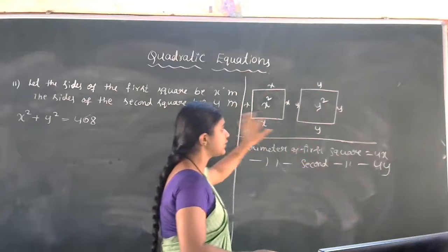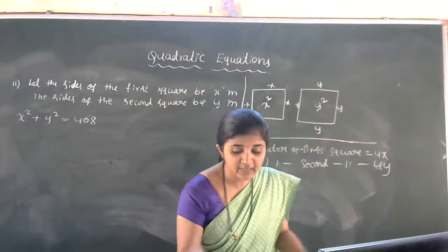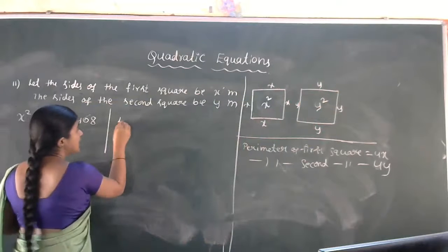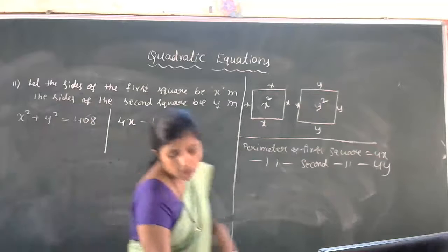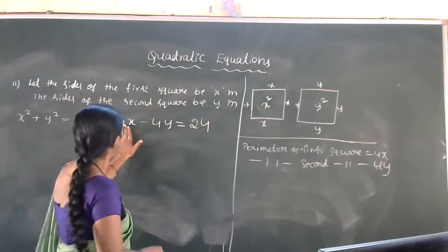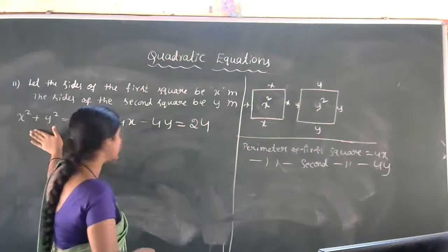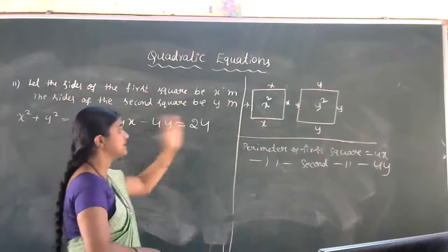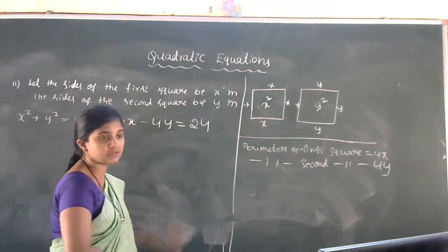The perimeter of the first square is 4x and the perimeter of the second square is 4y. According to the second statement, the difference of their perimeters is 24 meters, so 4x minus 4y equals 24. So we have: x² + y² = 468 and 4x − 4y = 24.